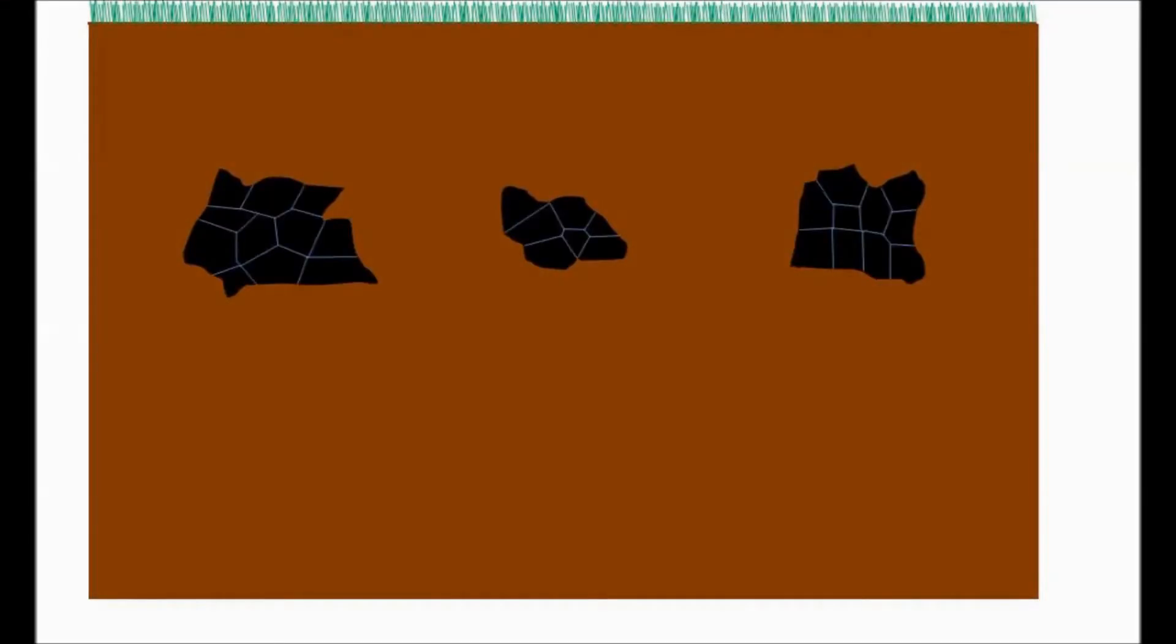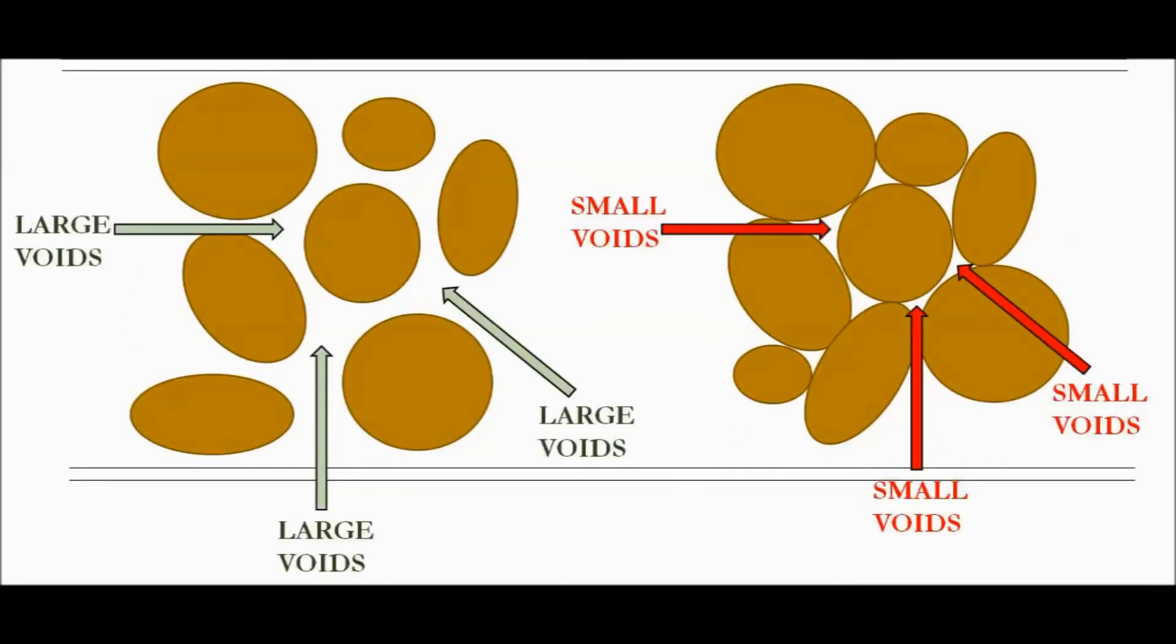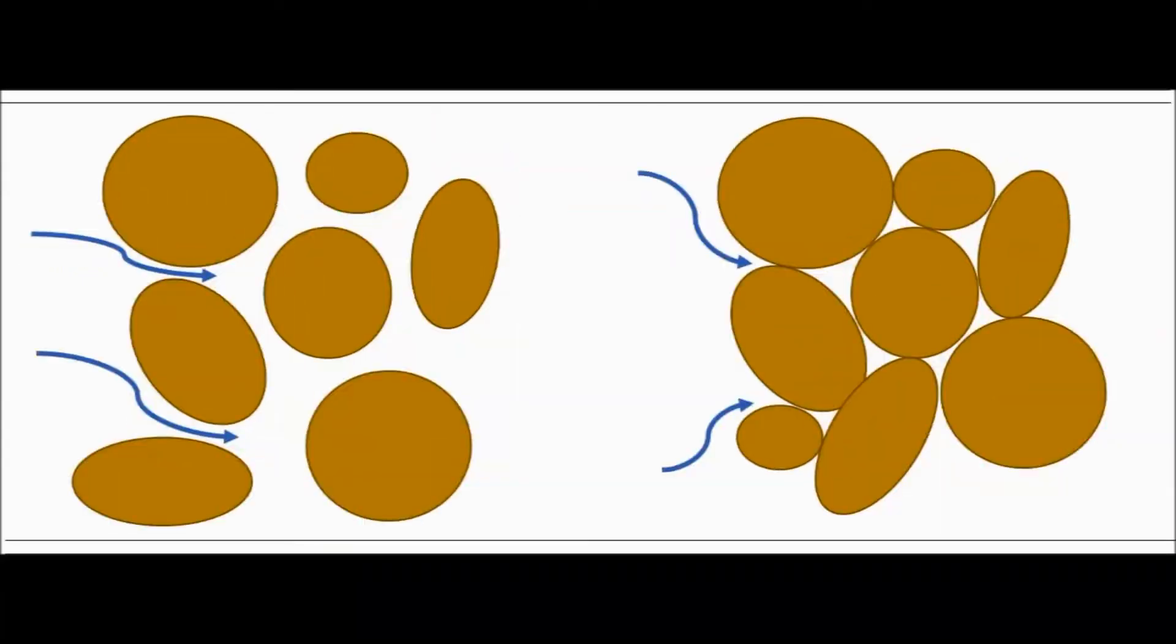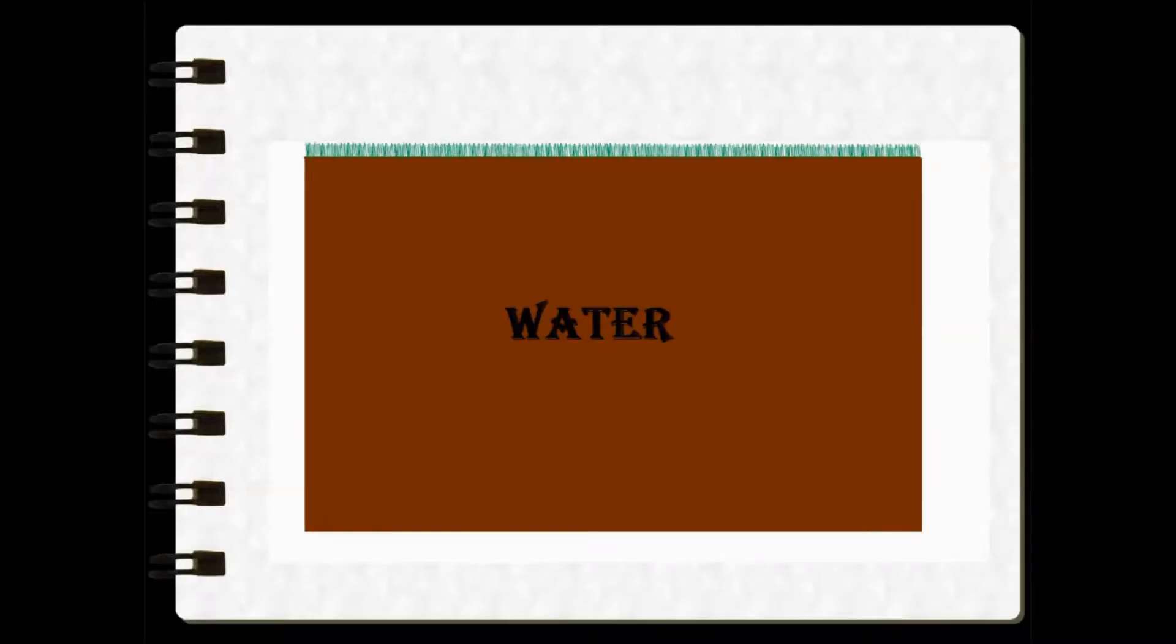Soil is made up of particles of broken down rocks. These particles have open spaces between them which are called voids. When water is added to soil, these voids create a pathway through which the water flows. This tendency of water to flow through soil is called permeability.